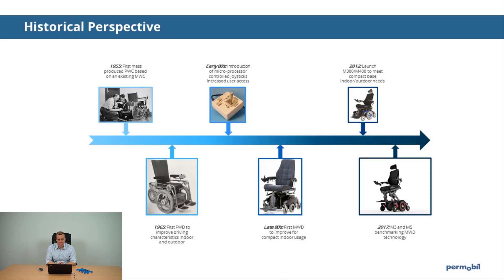In the mid 60s, Dr. Perudin from Permobile initiated the development of the power wheelchair. In 1967, the first front wheel driven platform was created and Permobile was founded.